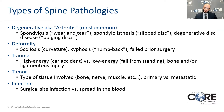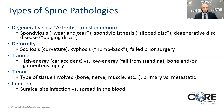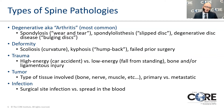Spondylolisthesis refers to a slipped disc — when one of the bones that make up the structure in the back has slipped forward in relation to the bone below it. Degenerative disc disease is also used interchangeably with bulging disc or disc protrusions. If you think about the disc like a jelly donut, if you flatten it out, it'll expand circumferentially but the height of the disc will decrease over time. That's what a bulging disc or disc protrusion refers to.